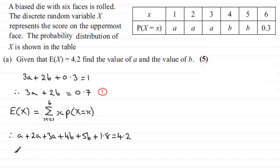Simplifying this then we end up with a total of 6a and then plus 9b and if I subtract 1.8 from both sides, 4.2 minus 1.8 is 2.4.